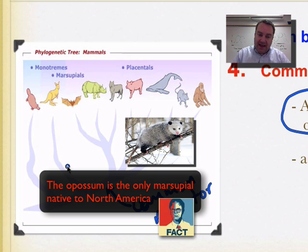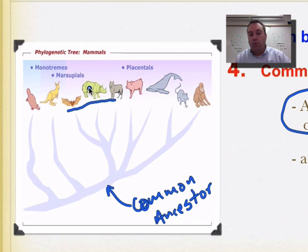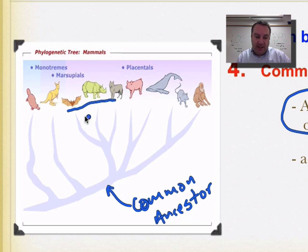The next group to diverge from the common ancestor are the marsupials — pouched animals that give birth to live babies, which then crawl up and live in a pouch until mature. Another group includes bats, rhinos, and wolves, which all come off the same branch. Pigs and whales form another branch, implying they are closely genetically related, as does the following group shown on the tree.